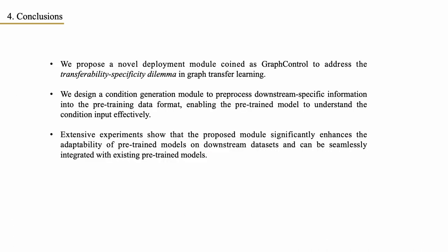In summary, the main contributions of our work can be summarized as follows. Firstly, we propose a novel deployment module coined as Graph Control to address the transferability-specificity dilemma in graph transfer learning. Secondly, we design a condition generation module to pre-process downstream specific information into the pre-training data format, enabling the pre-trained model to understand the condition input effectively. Lastly, extensive experiments show that the proposed module significantly enhances the adaptability of pre-trained models on downstream datasets and can be seamlessly integrated with existing pre-trained models.